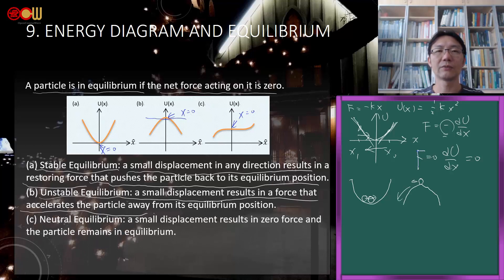It won't return to the original point - that's unstable equilibrium, like a bowl flipped upside down. There's also neutral equilibrium, meaning whether you displace it right or left, it's basically still in a force-free region with no force acting on it. That's neutral equilibrium - over a relatively large range, the force remains zero.